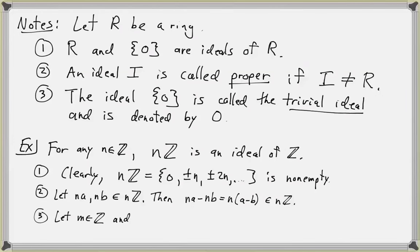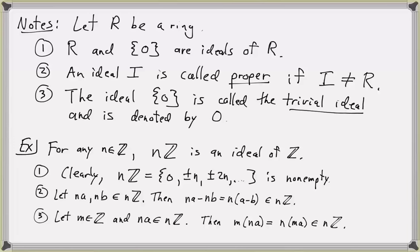Now let m be any arbitrary integer and let na be an element of nℤ. We need to show that the product m·(na) is an element of nℤ. Since the integers are commutative, m·(na) = n·(ma), and since m and a are both integers, ma is an integer, so n·(ma) is an element of nℤ. In a non-commutative ring we would also check right multiplication, but since the integers are commutative, we only need to check this one case.